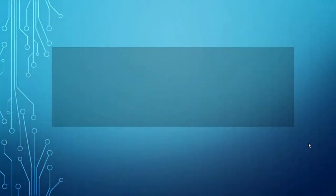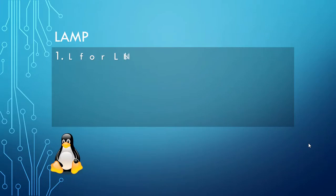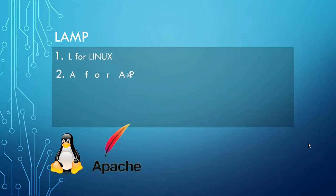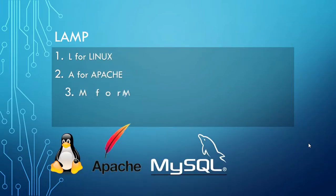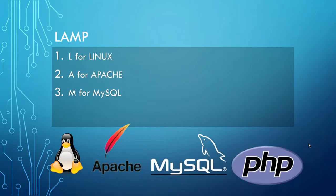LAMP is a software web bundle, named as an acronym for four open source components: L for Linux, A for Apache, M for MySQL, and P for PHP.